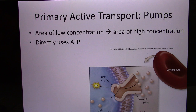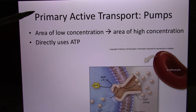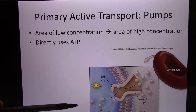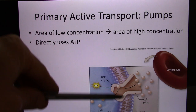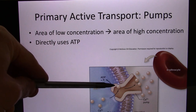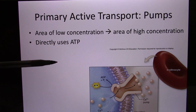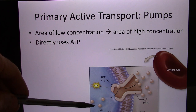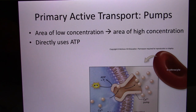For transport that requires ATP, we call them pumps — primary active transport. An example is the calcium pump. Every cell has a low calcium level inside and a high level outside. They achieve this with the calcium pump: you need to use energy because the molecule moves from low to high — this won't naturally happen. They use ATP as the energy source, pumping calcium from low inside to high outside.